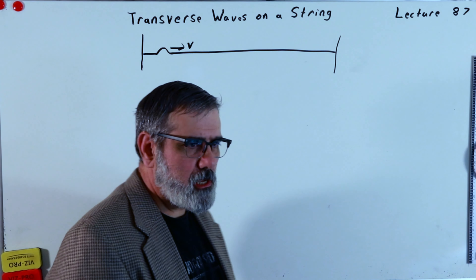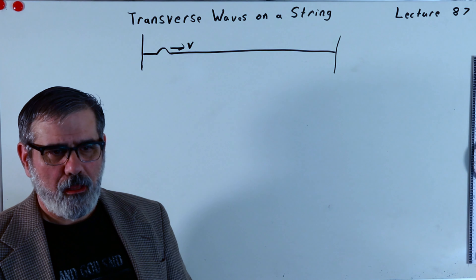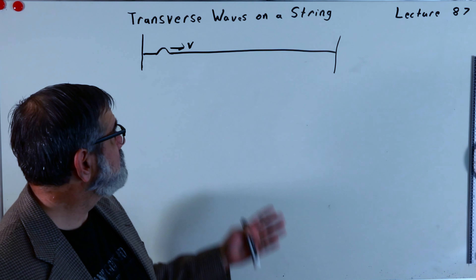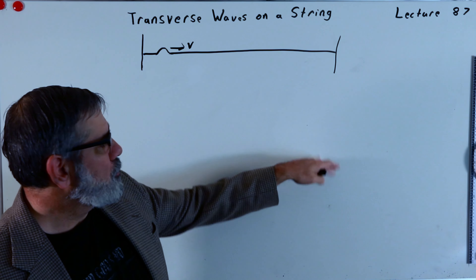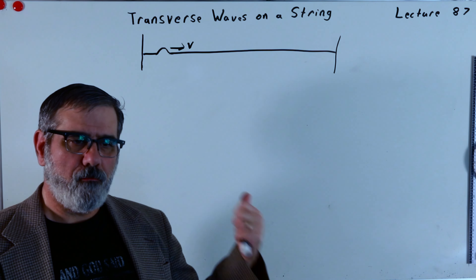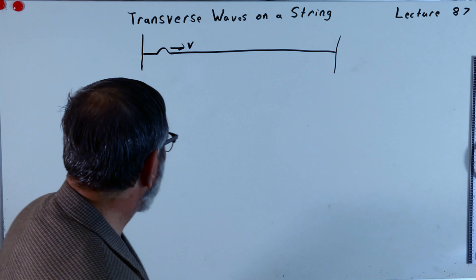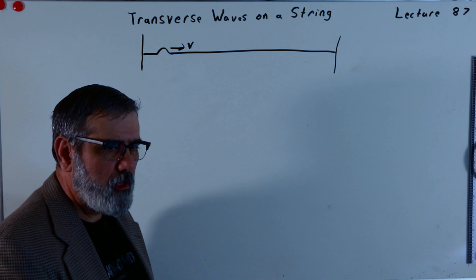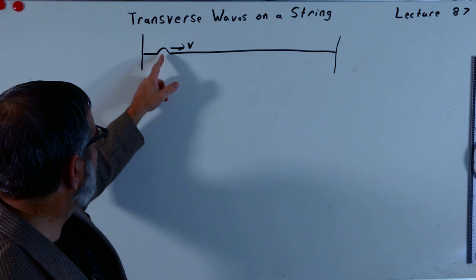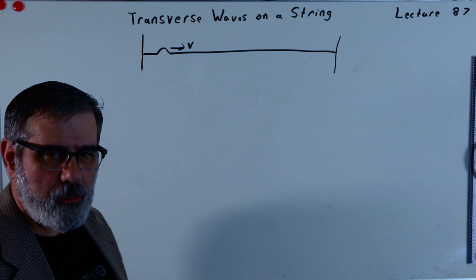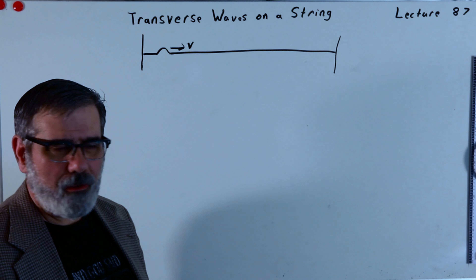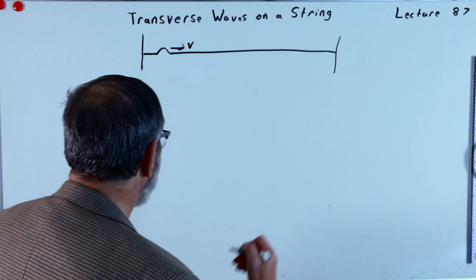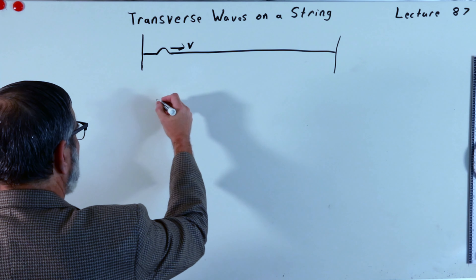Last time we derived the wave equation. This time we're going to come up with a wave equation from Newton's laws for a string. We have to set this thing up and also restrict what we're considering here. The amplitude — the size of this little pulse or packet — is rather small, and I'll explain what I mean by that in just a second.